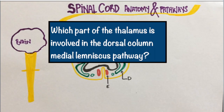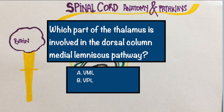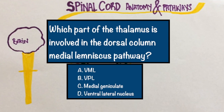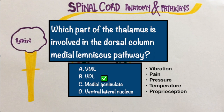Question 2: Which part of the thalamus is involved in the dorsal column medial lemniscus pathway? Option A, VML. Option B, VPL. Option C, medial geniculate. Option D, ventral lateral nucleus. The correct answer is VPL. VPL stands for ventral posterior lateral nucleus. It is responsible for sensing vibration, pain, pressure, temperature, and proprioception. Comment below if you want me to make a video on the anatomy of the thalamus.